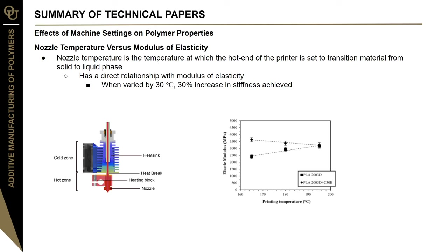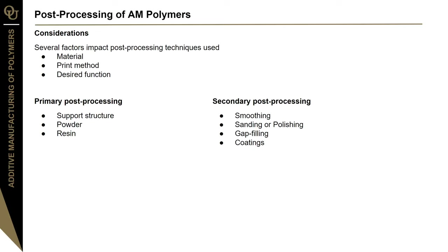The post-processing of additively manufactured polymers is also important. The technique used depends on several factors, including the specific polymer used, the additive process, and the desired function of the part. We can break down post-processing into two main categories: primary and secondary. Primary post-processing refers to the mandatory steps that must be taken once the part is manufactured, such as removal of support structure, powder, or resin left behind. Secondary processing involves additional steps to enhance the function of the part, such as improving surface finish through smoothing or polishing, filling gaps, or applying coatings for a particular application.